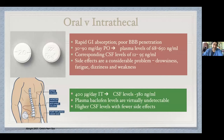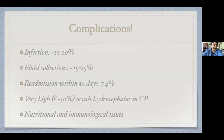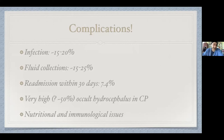But there are significant complications. Infections are quoted between 15 and 20%, fluid collections 15 to 25%, readmission within 30 days of pump placement about 7.5%. There's also a really high rate of occult hydrocephalus — you can have low-grade elevated intracranial pressure in these kids and you wouldn't know it, because they've got so many neurological abnormalities it's hard to tell if they have a headache. When I do my lumbar punctures for the test dose, I always test opening pressure, and I'd say at least 50% have elevated pressures. They also have significant nutritional and immunological issues — when you have a brain injury that bad, the body cannot tend to itself as well.